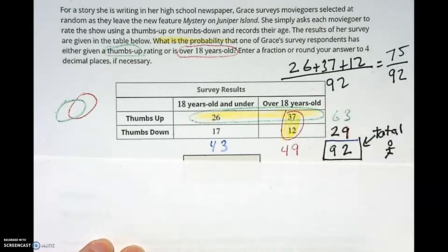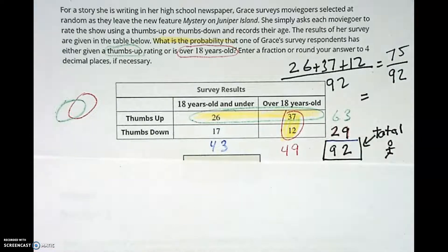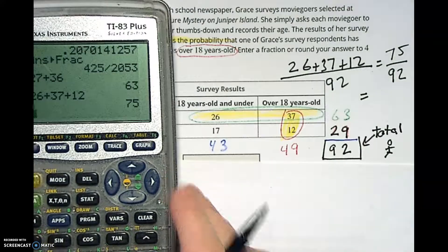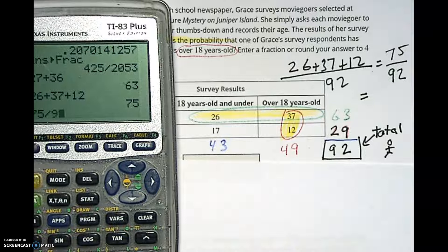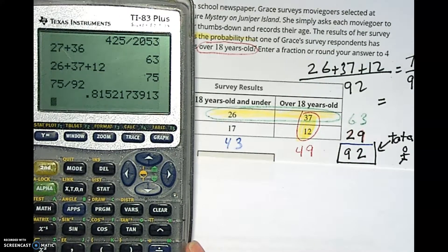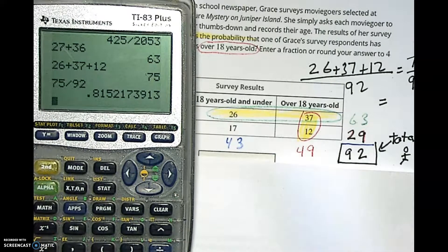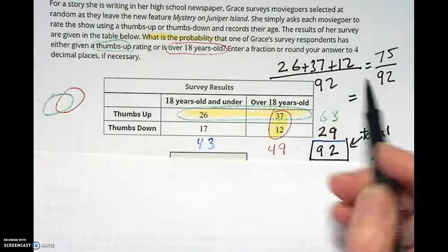So we're going to stick that in our calculator and make sure we round and all that stuff. So 75 divided by 92, 0.8152 blah blah blah. And we need to read really carefully - it says to either do the fraction or round it to four decimal places.